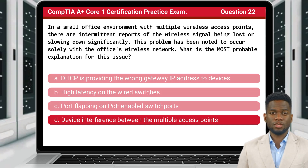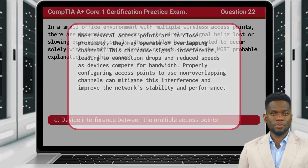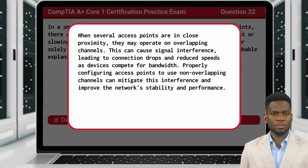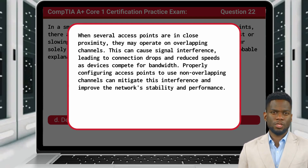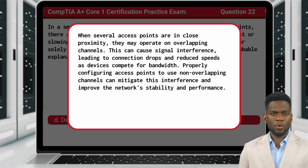The answer is D: device interference between the multiple access points. When several access points are in close proximity, they may operate on overlapping channels. This can cause signal interference, leading to connection drops and reduced speeds as devices compete for bandwidth. Properly configuring access points to use non-overlapping channels can mitigate this interference and improve the network's stability and performance.